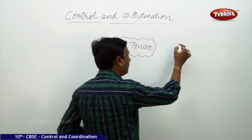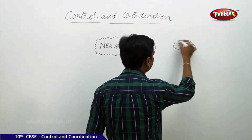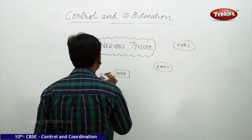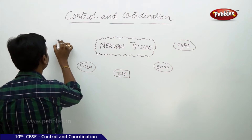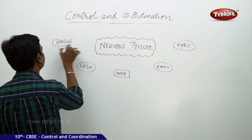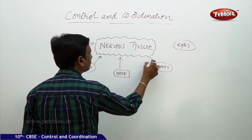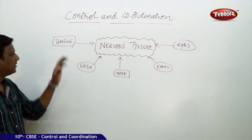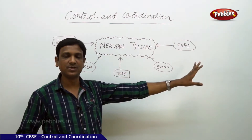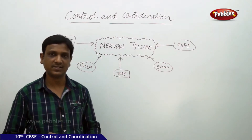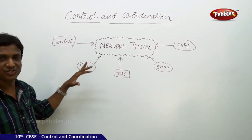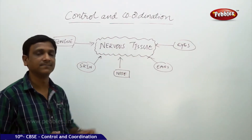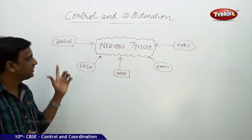How are they connected? Our eyes, ears, nose, skin, and tongue — all these are connected to this nervous tissue. These are all our sense organs, by which we can sense the change in the environment. These organs have got some specialized cells which belong to the nervous system. We have some receptors in each of these sense organs.